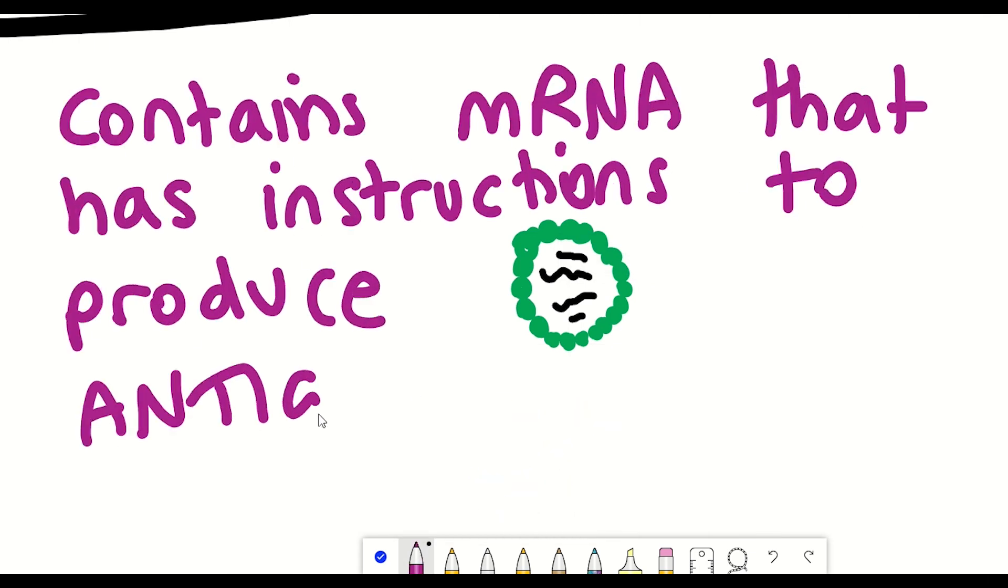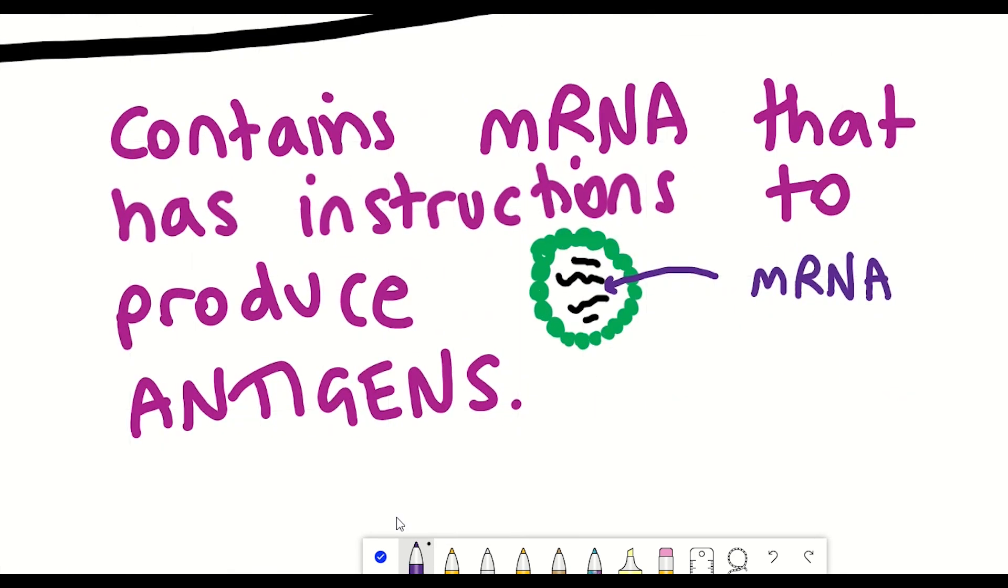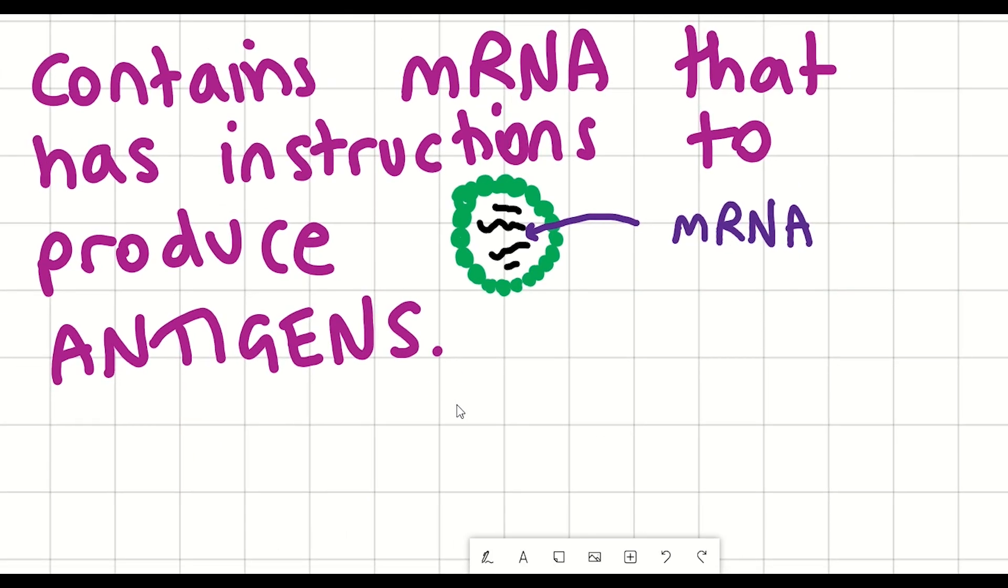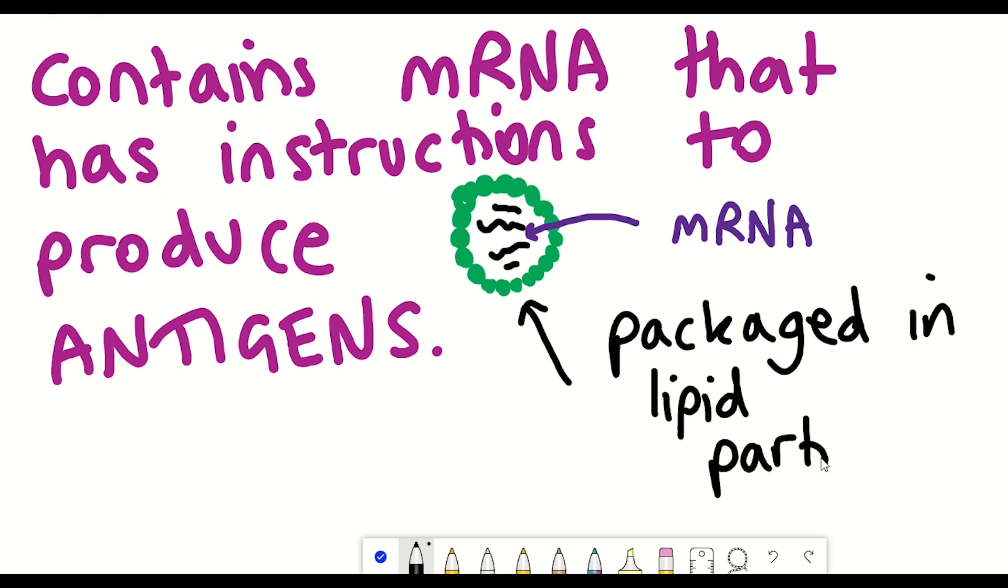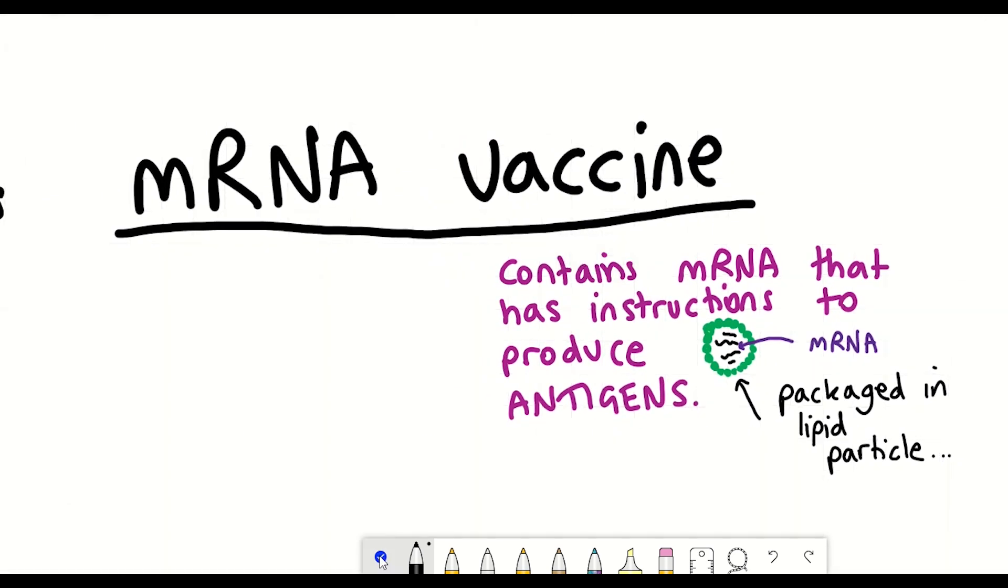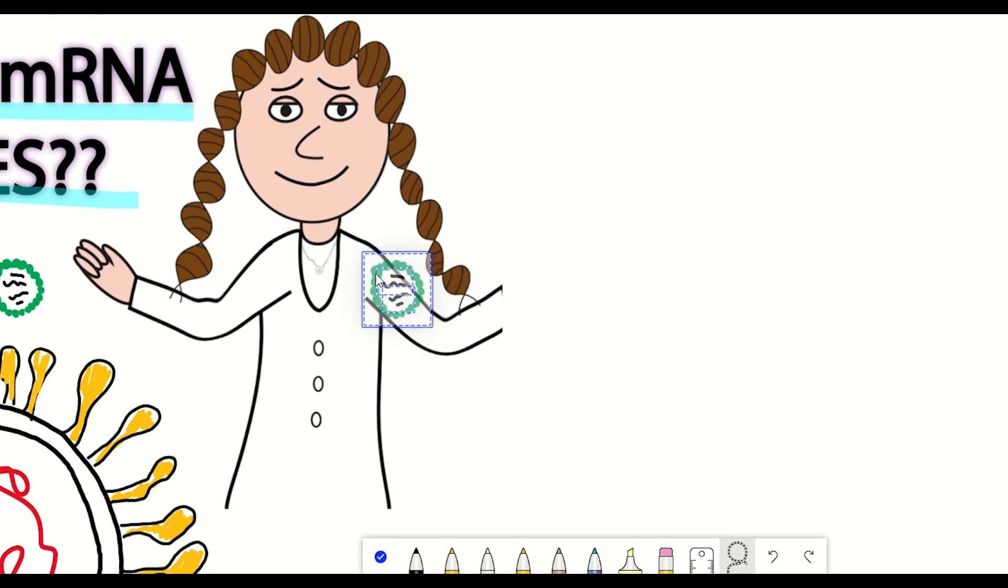And now mRNA is a pretty temporary molecule within our cells and so it's vulnerable to degradation. So how do you get the mRNA into our cells so that our cells can produce the antigen that the mRNA encodes for? Well, one way this can be done is by packaging the mRNA inside a lipid particle that can cruise through our bodies and make it into our cells.